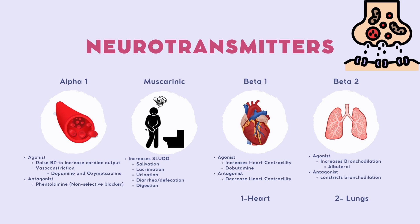Moving on to alpha-1: when an agonist acts on it, it raises blood pressure and increases cardiac output, which makes sense — anytime we raise blood pressure, the heart works harder, causing vasoconstriction. An example of an antagonist is phentolamine. For muscarinic receptors, increasing muscarinic activity increases SLUD — salivation, lacrimation, urination, defecation, and digestion.